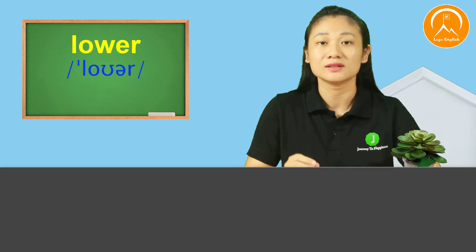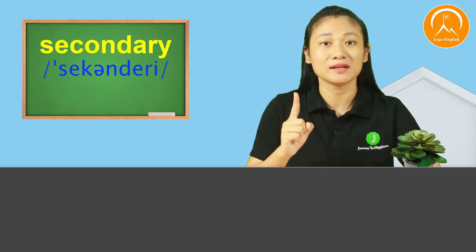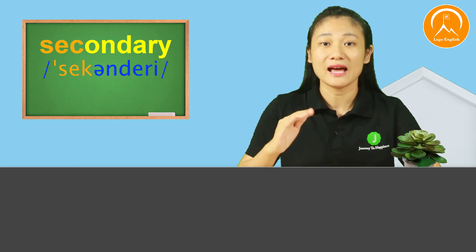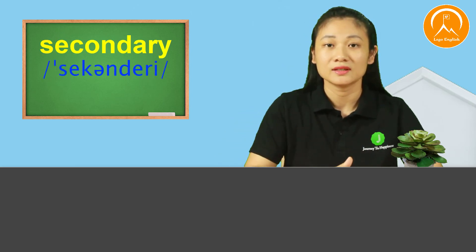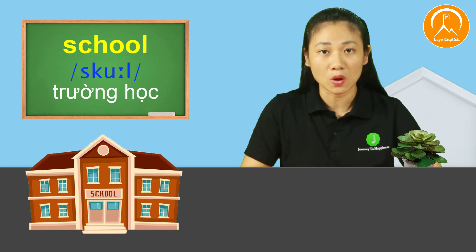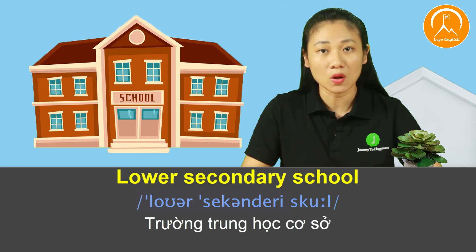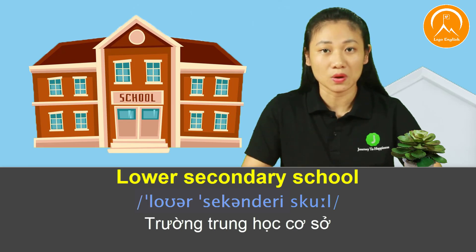The vowel sound is 'ơ' — lower. Next: 'secondary.' The stress falls on the first syllable: 'sec.' Say it again. Secondary. The voice drops on the following syllables. Secondary. And the word for school is 'school.' Again. School. Look at the screen and practice listening while repeating along with me. Say it again: Lower. Secondary. School. One more time: Lower. Secondary. School.